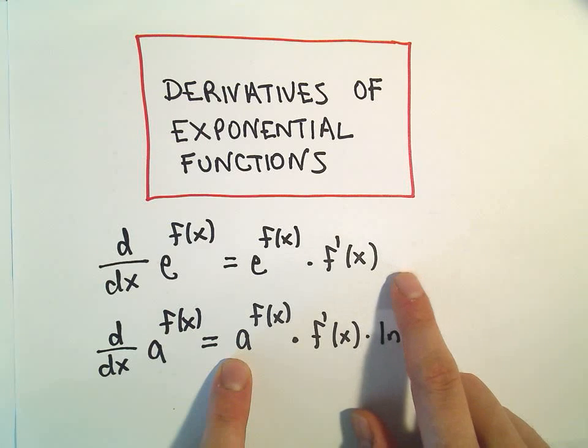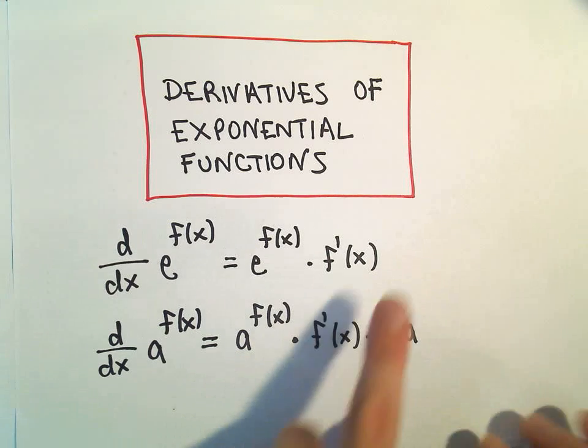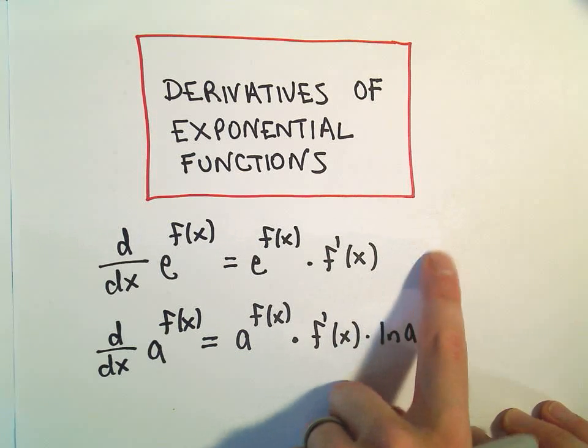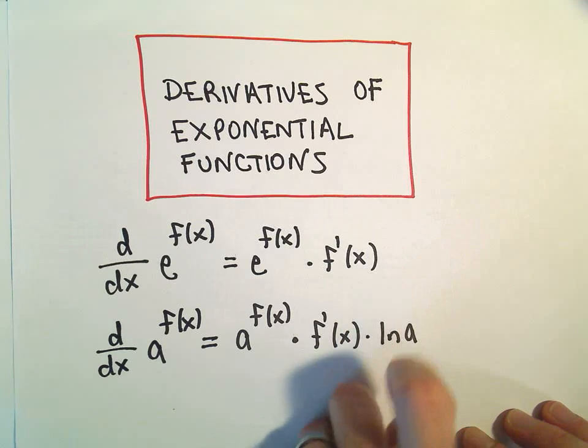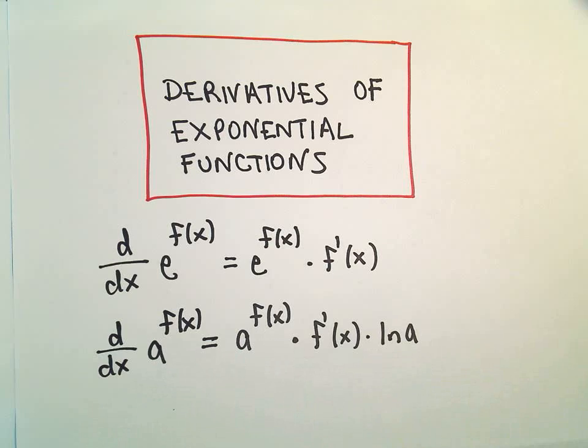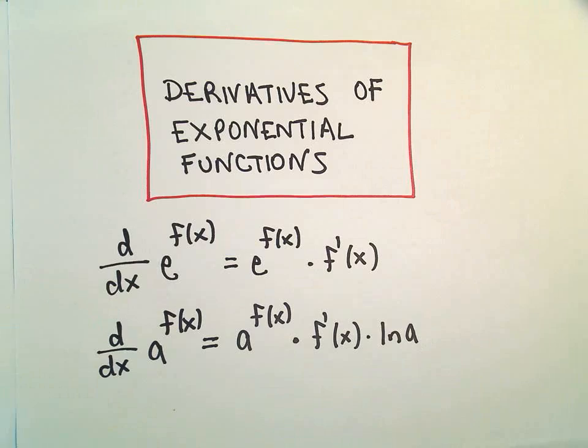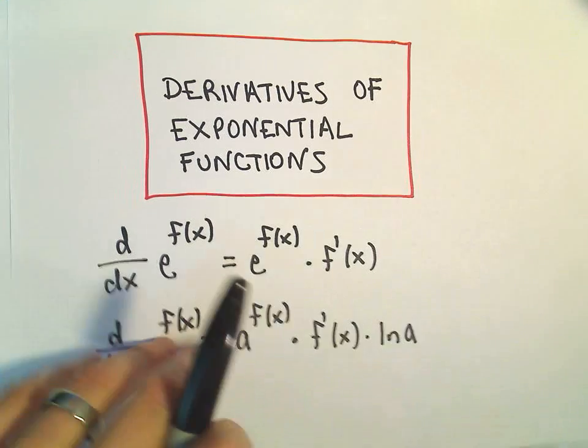And you really do the same thing here, just as a remark. You do multiply by the natural logarithm of e, but recall that the natural logarithm of e is just 1, so we don't even write it. So it's there, but it's just 1, so let's just write it a little more succinctly.